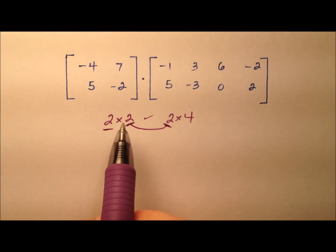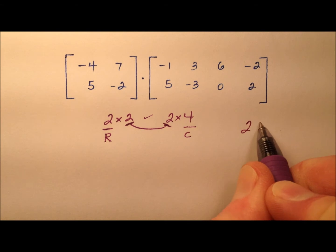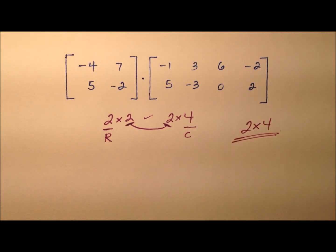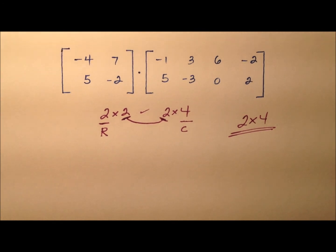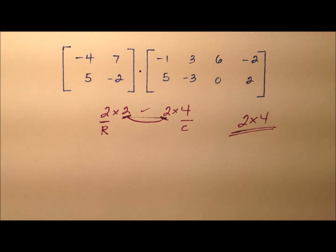So that means the dimensions of the product matrix will be 2 rows and 4 columns, so the product matrix will be a 2 by 4 matrix. Okay, so let's go ahead and get into the multiplication now, since now we know we can do it, and we also know the dimensions of the product matrix.